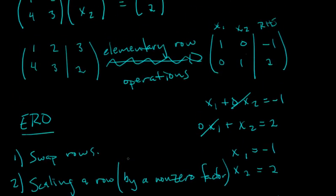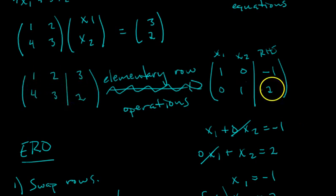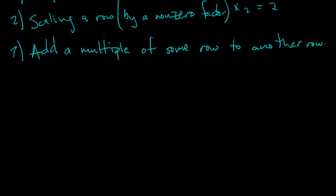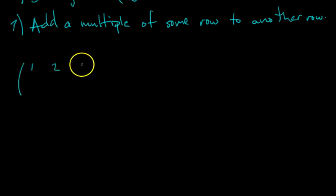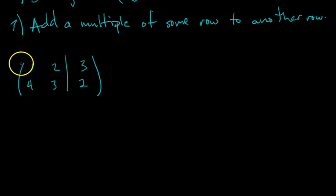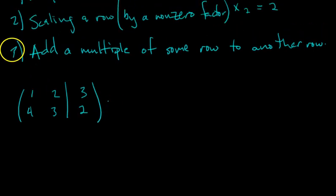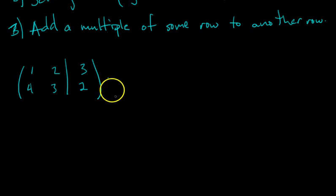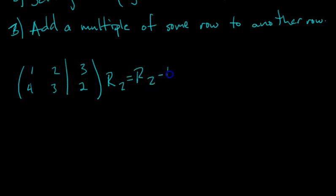Let's actually go through and row reduce this matrix to the target matrix. We start with the augmented matrix: [1, 2, 3 | 3] on row one and [4, 3, 2] wait — the matrix entries are 1, 2, 3 in row one and 4, 3, 2 in row two with the augmented column. The first step: we already have a 1 in the top-left, so let's get a zero below it using elementary row operation three.